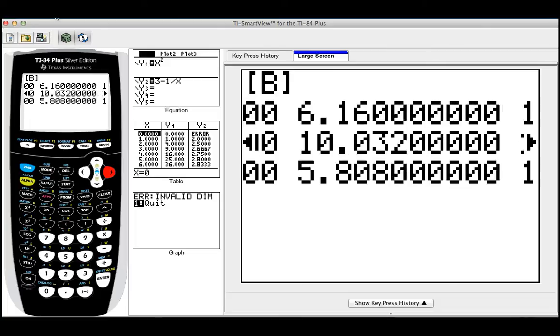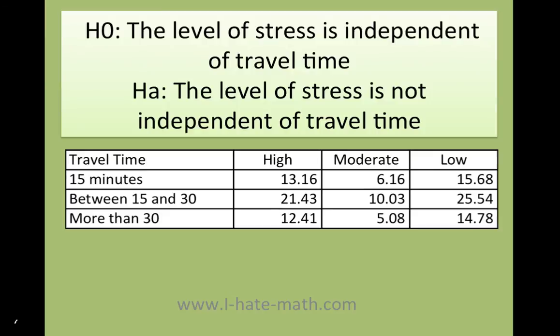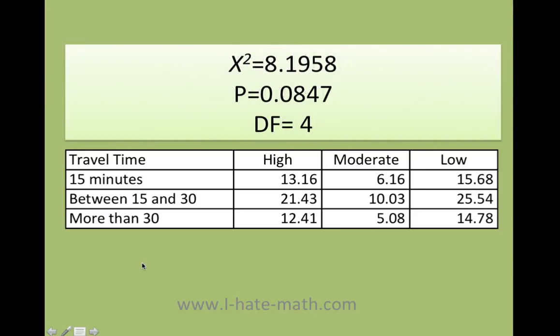Let's go ahead and finalize our problem now. Okay, so here we have the matrix with the expected values that I got from the calculator. Let's go ahead and figure out what is the conclusion. I got my test statistics, my p-value, and the degrees of freedom. So let's remember.